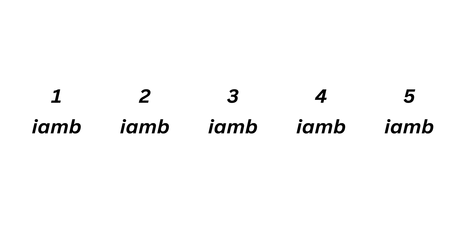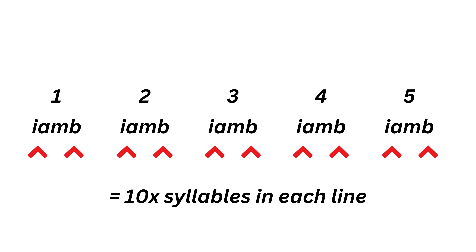Now we move on to pentameter - this is the meter of the verse, i.e. the meter of pentameter. This is basically how many rhythm feet, how many iambs, are in a standard line of text. The word penta comes from Greek and means five. Shakespeare math: penta means five and an iamb has two syllables, so you're going to have five iambs in a standard line of text. Because an iamb has two syllables, a standard line of classical text has ten syllables. Two times five equals ten. Shakespeare maths.